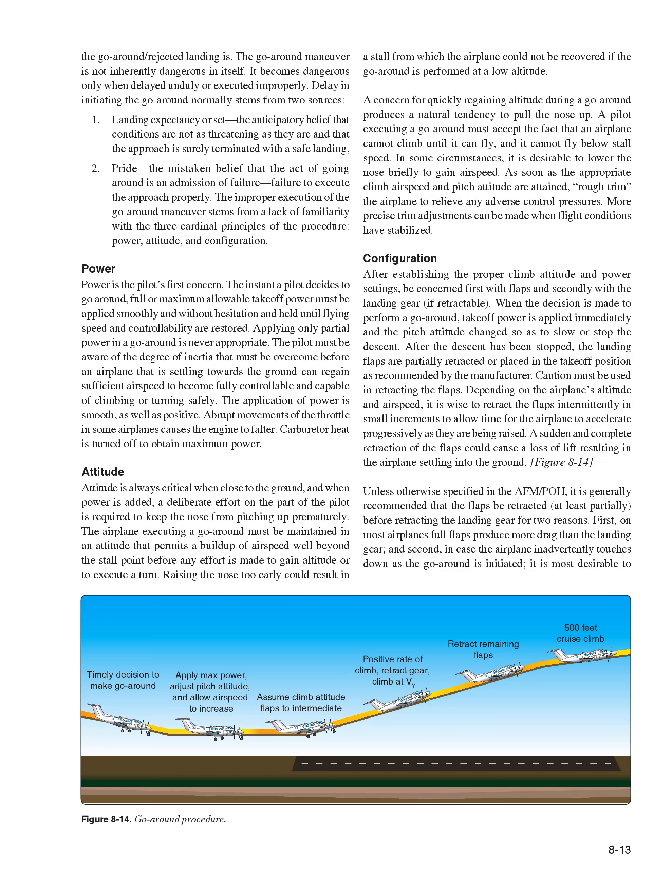The most critical go-around is one started when very close to the ground. The go-around maneuver is not inherently dangerous in itself—it becomes dangerous only when delayed unduly or executed improperly. Delay in initiating the go-around normally stems from two sources: first, landing expectancy or set—the anticipatory belief that the approach is surely terminated with a safe landing; and second, pride—the mistaken belief that going around is an admission of failure. The improper execution of a go-around stems from a lack of familiarity with the three cardinal principles: power, attitude, and configuration.